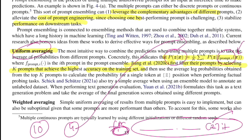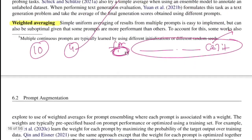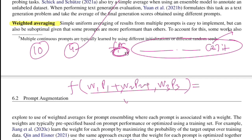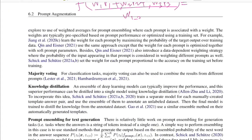Uniform averaging has its own drawbacks because certain prompts may outperform others. To address this, we assign weights to each prompt during aggregation — this is called weighted averaging. We give weight w1 to prompt one, w2 to prompt two, w3 to prompt three, and compute a weighted sum divided by (w1 + w2 + w3), skewing the final score toward higher-weight prompts.